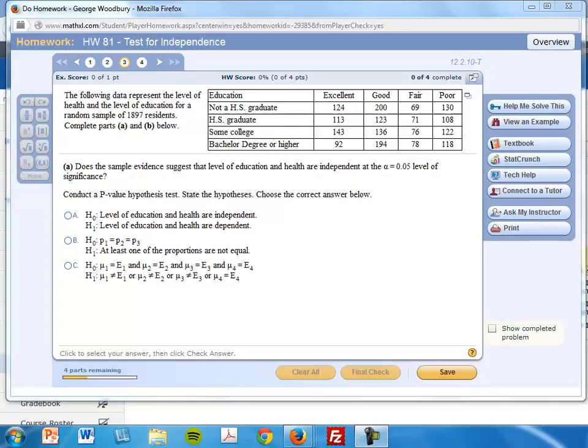Alright class, just going to walk you through one of the homework problems from homework number 81. This involves the conditional distribution, so I'll show you how to get that part. I think that's the harder part here. This is problem 3 from homework 81.